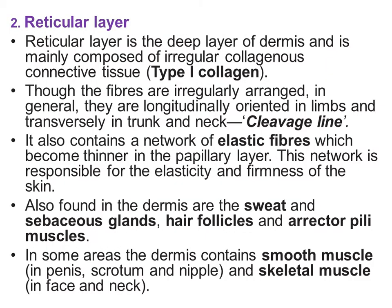The second deeper layer of the dermis is the reticular layer, mainly composed of irregular collagenous connective tissue — type 1 collagen. The fibers are generally longitudinally oriented in limbs and transversely oriented in the trunk and neck — these are called cleavage lines. It also contains a network of elastic fibers, which become thinner in the papillary layer; this network is responsible for the elasticity and firmness of the skin. The dermis contains sweat glands, sebaceous glands, hair follicles, and arrector pili muscles.